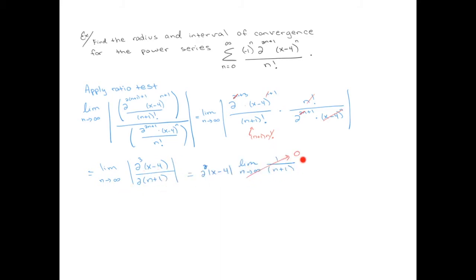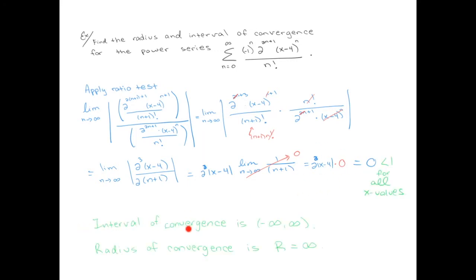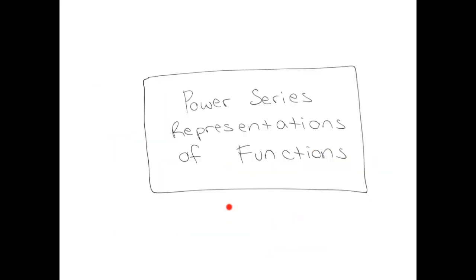We have our simplified expression, and of course this goes to 0 — 1 over infinity goes to 0. So the final value coming out of the ratio test is 2^2 times the absolute value of x minus 4, all times 0, so the whole thing equals 0. Therefore our interval of convergence is all x values, from minus infinity to infinity, and the radius of convergence is also infinity.